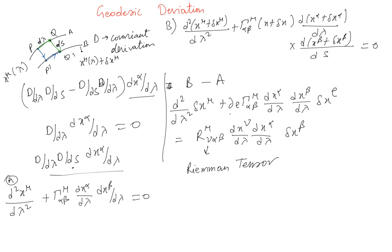I wanted to derive the geodesic deviation equation, which shows how δx changes as λ changes — in other words, as you go along the curve, what happens to the separation between the two geodesics. We will talk more about the Riemann tensor in the following class and then move on to curvature.